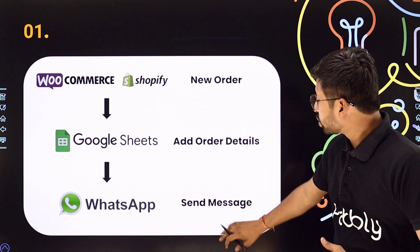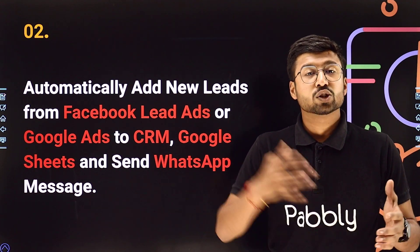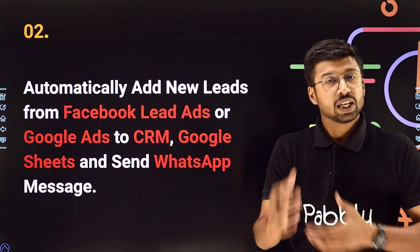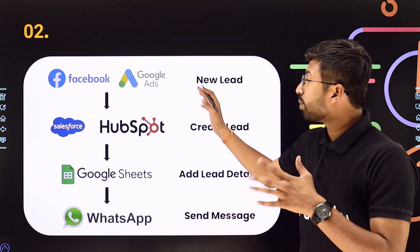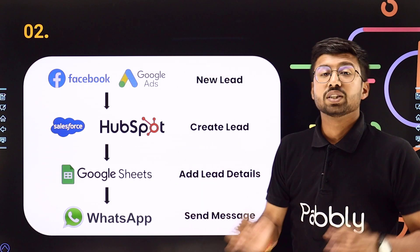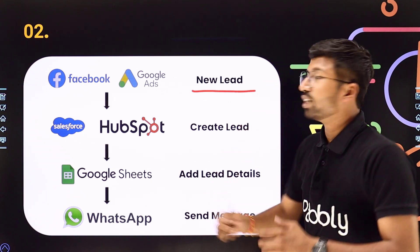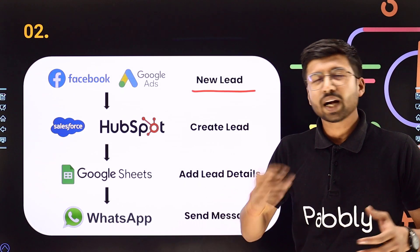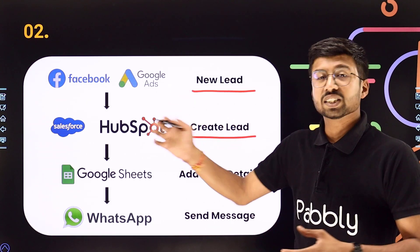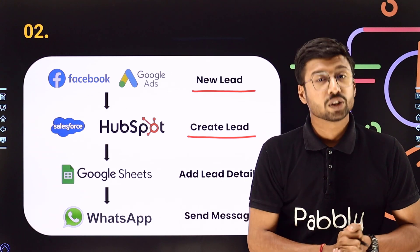Moving ahead to the second automation, that is automatically adding leads from Facebook Ads or Google Ads into Google Sheets, CRM, or sending a WhatsApp message. If you are running ads on Facebook or Google and generating new leads, this automation is a must-use for you. Whenever you generate a new lead on Facebook Ads or Google Ads, automatically you can add that lead into your CRM platform like Salesforce, HubSpot, Pipedrive or any other CRM platform of your choice.